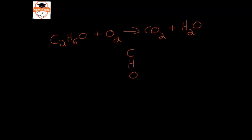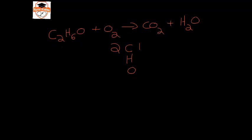So there are two carbons on the reactant side and one on the product side. There are six hydrogens on the reactant side and two on the product side and there are three oxygens on the reactant side.